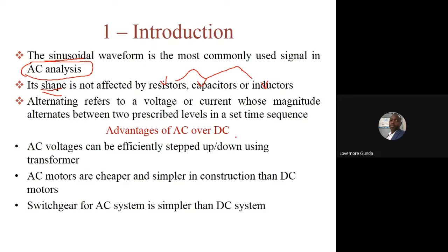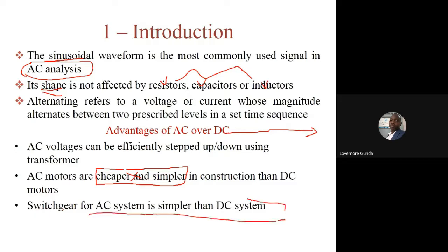What are the advantages of using AC over DC? AC voltages can be efficiently stepped up or down using a transformer, so when you want to transmit electricity over long distances you can use transformers — you cannot do this easily with DC. AC motors are also cheaper and simpler to construct than DC motors, and the switchgear for AC systems — circuit breakers and the like — is simpler in design than for DC systems.